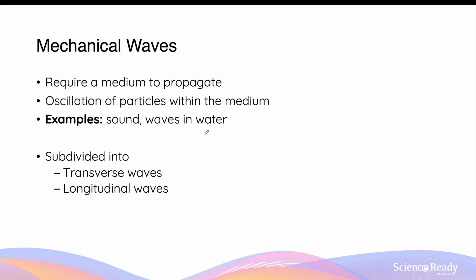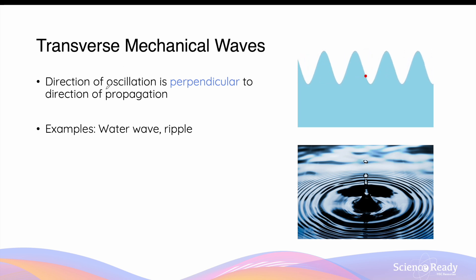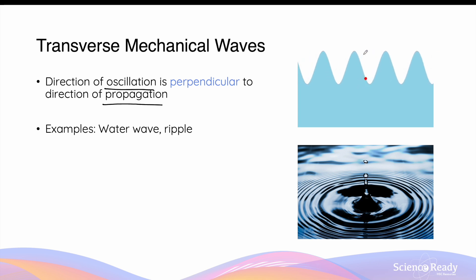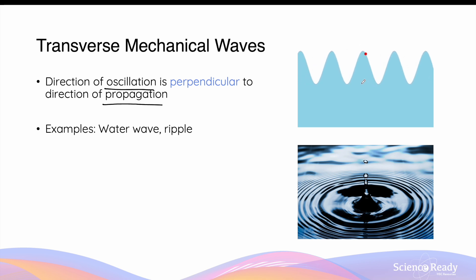Mechanical waves can be further subcategorized into transverse mechanical waves and longitudinal mechanical waves. Transverse mechanical waves are defined as ones where the direction of oscillation is perpendicular to the direction of propagation. In simple words, when you focus on the direction of oscillation of a particle within the medium through which the mechanical wave is propagating, it will travel in a direction perpendicular to the direction of travel of the wave.